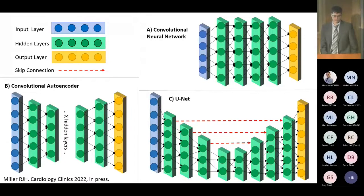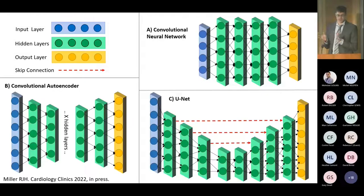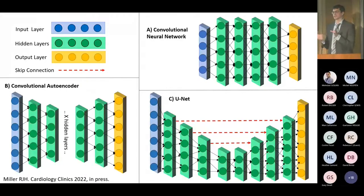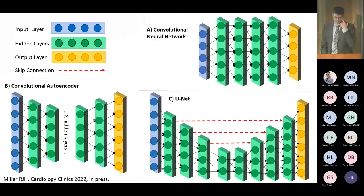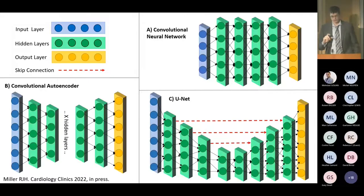A convolutional autoencoder is used for image denoising. The inner hidden layers have less capacity than the input or output layer, and the model is asked to copy the input image to the output, forcing it to select only the most important features. A U-Net is a specialized autoencoder with skip connections that carry fine image details directly to the output, producing denoising while preserving image detail.